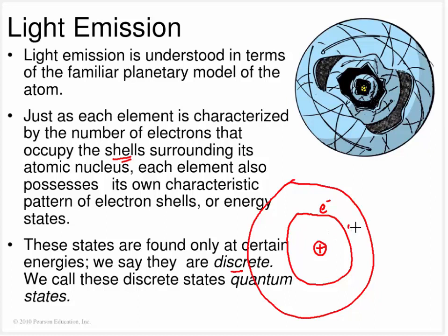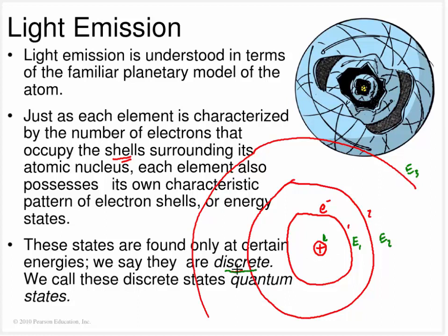This would be the first electron shell, this would be the second electron shell, and there could be one out here - the third electron shell, and so on. There's energy involved with these shells: this would be the first energy state, the second energy state, and the third energy state. These things have to be discrete - electrons have to live at these certain orbits and only certain orbits. The fact that they are discrete means these electrons live in quantum states, where quantum means it has to be one or two or three. It can't live somewhere in between - that's not possible.